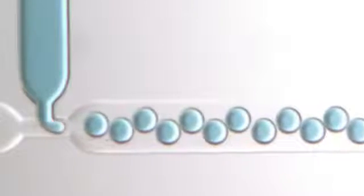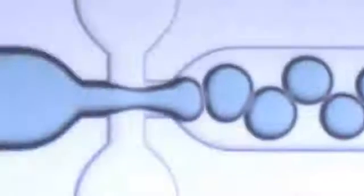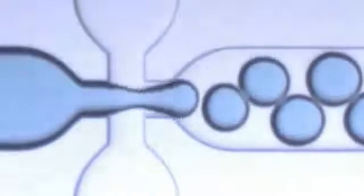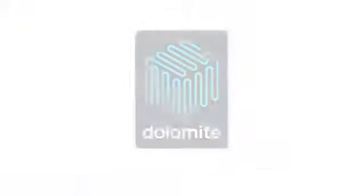Water and oil meet at the flow focusing junction and water droplets form with narrow size distribution and consistent production rate. By varying the water flow rate or chip design it is possible to adjust the droplet size.